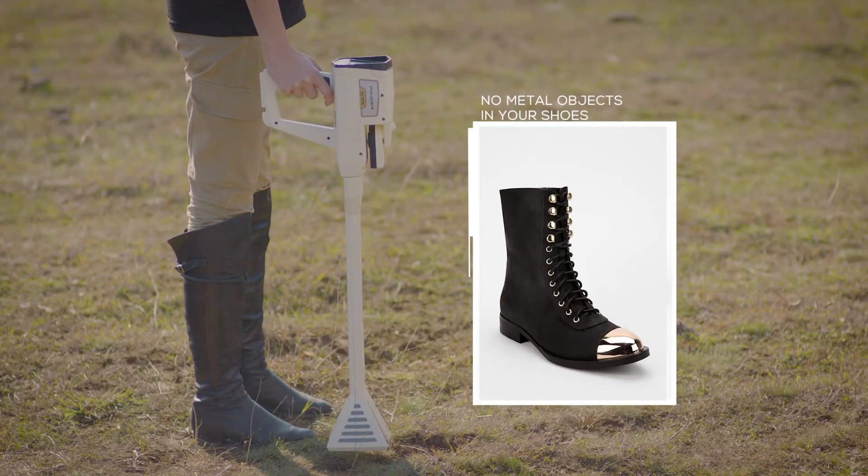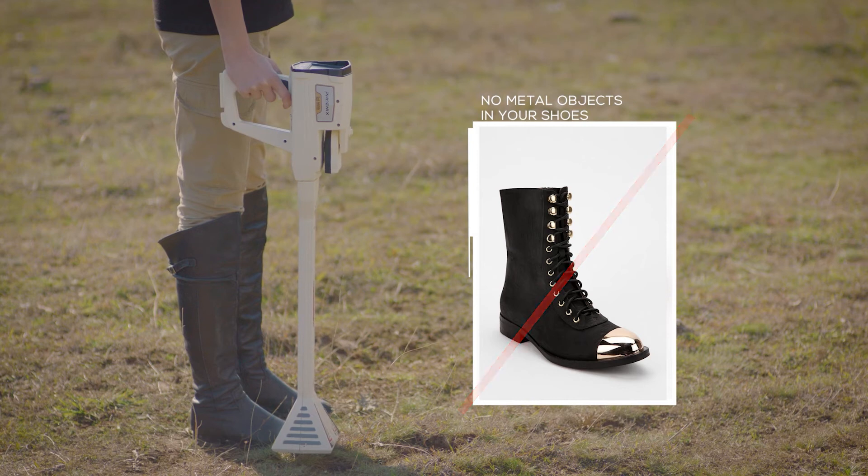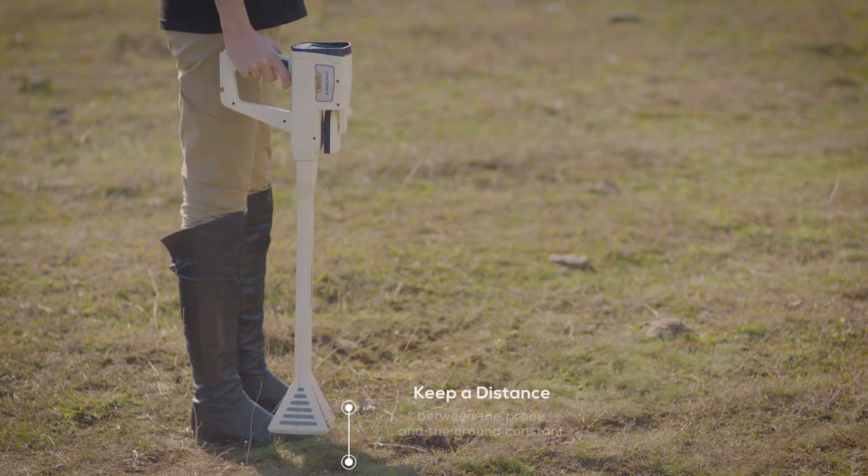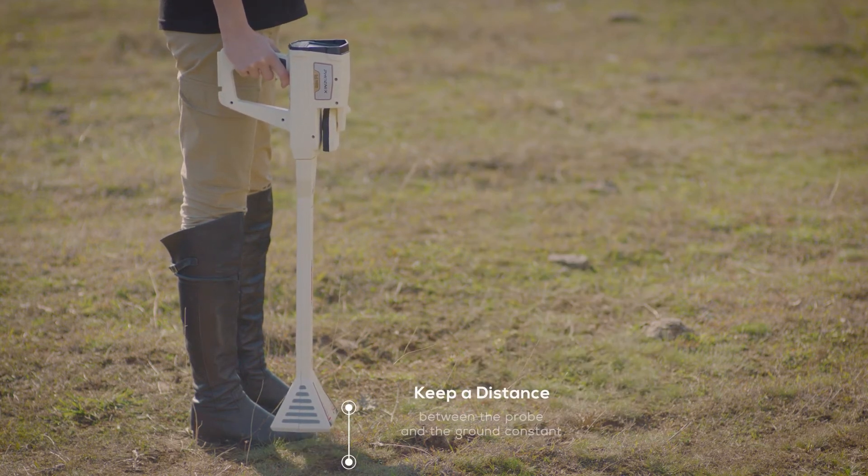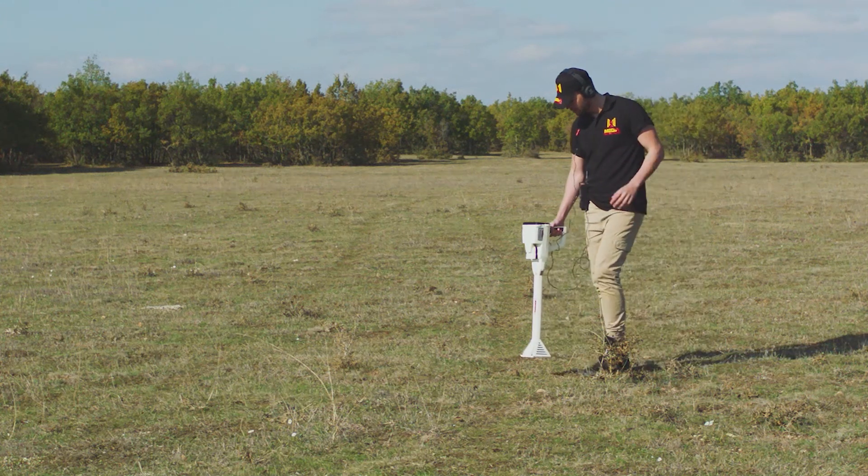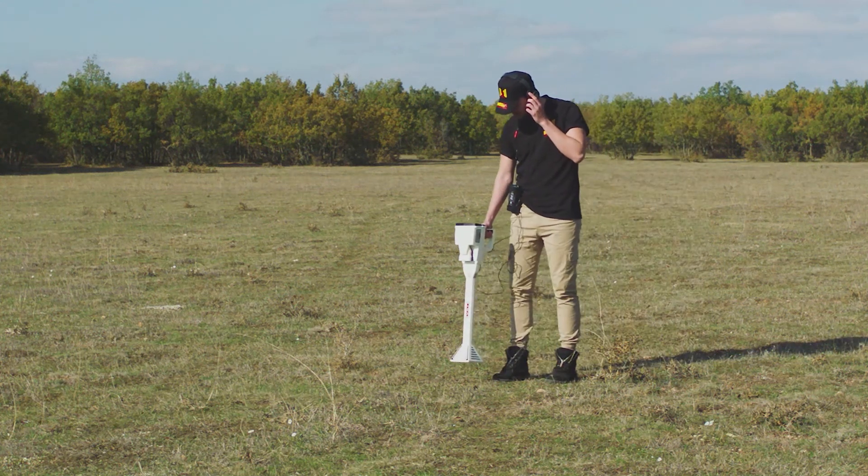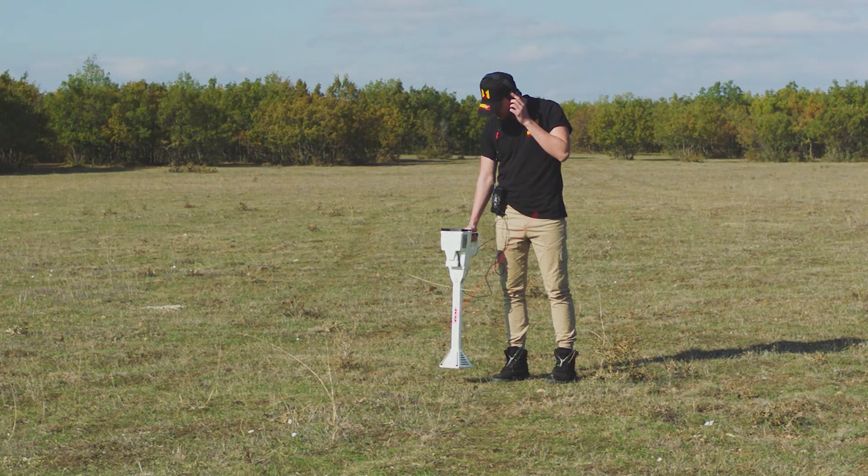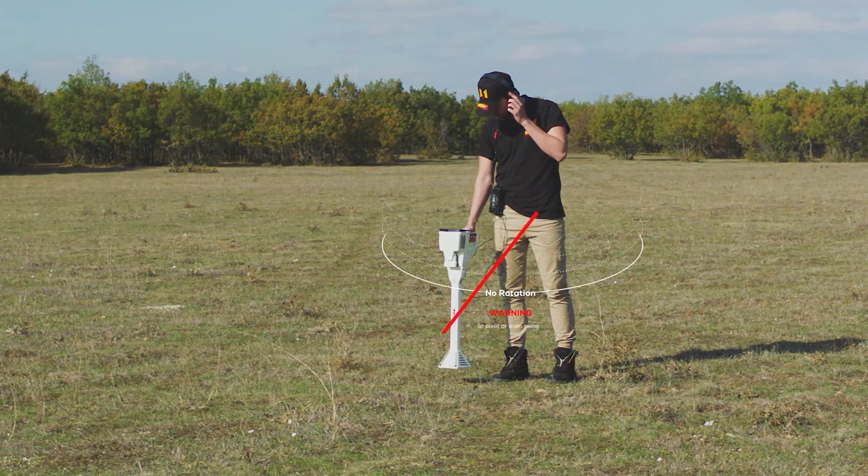Make sure that there are no metal objects in your shoes and keep the distance between the probe and the ground constant. Also during this procedure, the VST sensor should point vertically toward the ground. It should not rotate or pivot or even swing.